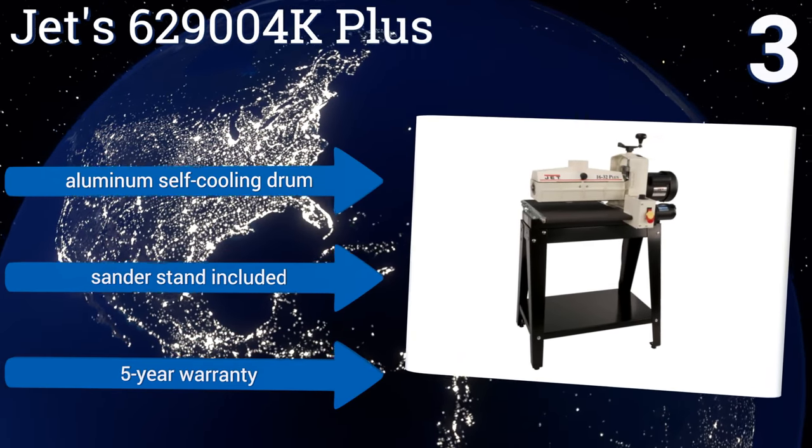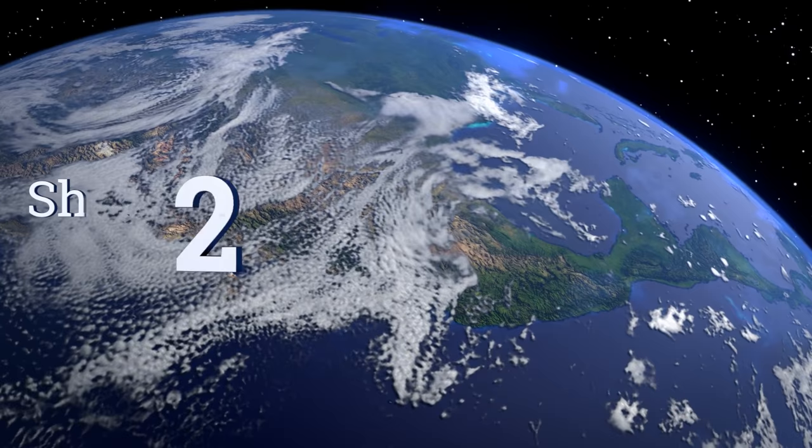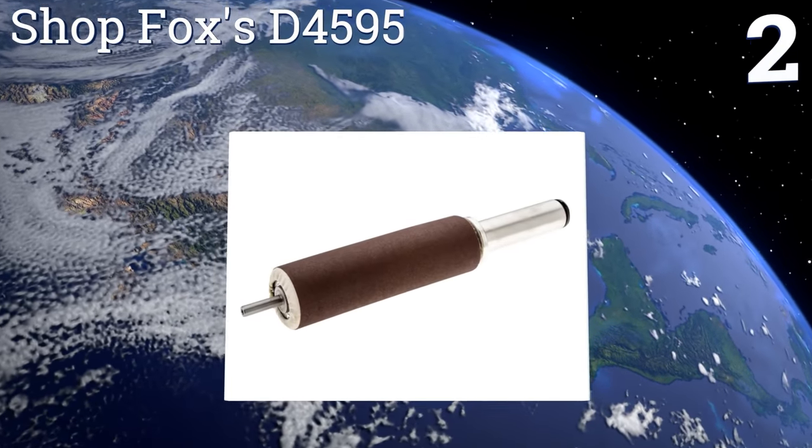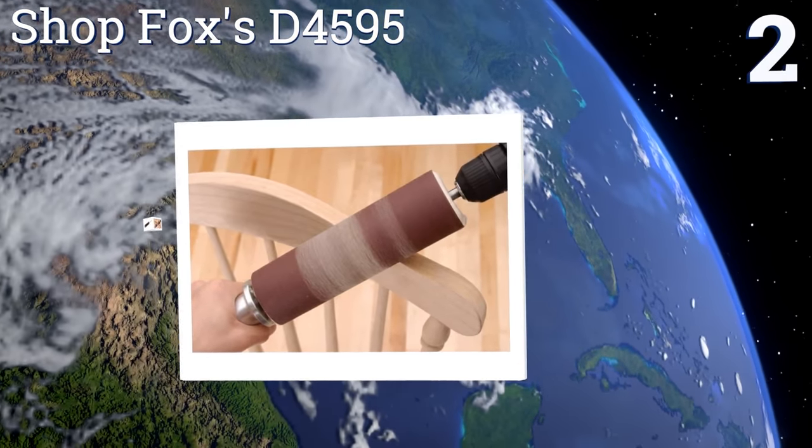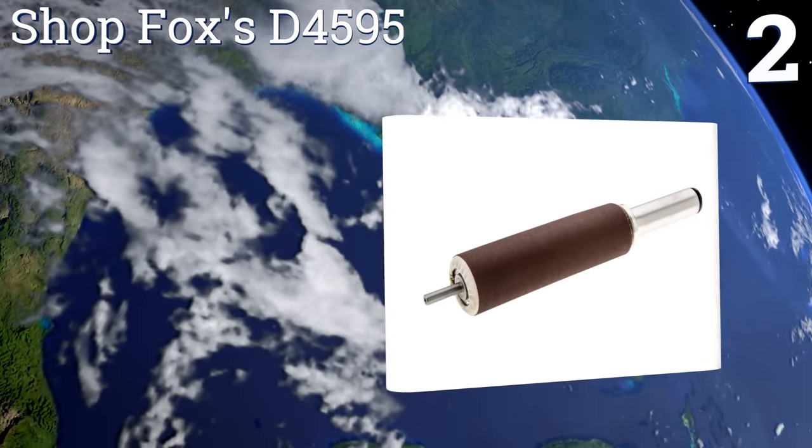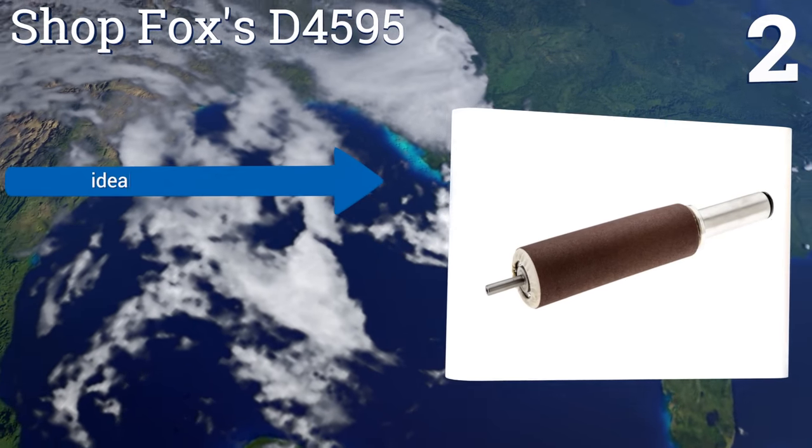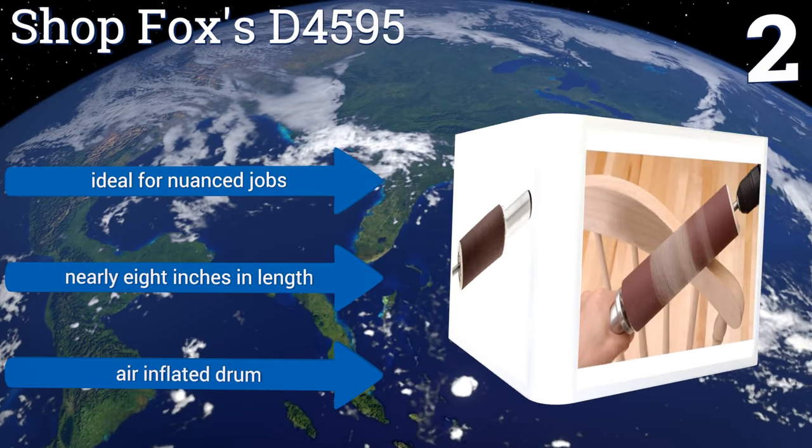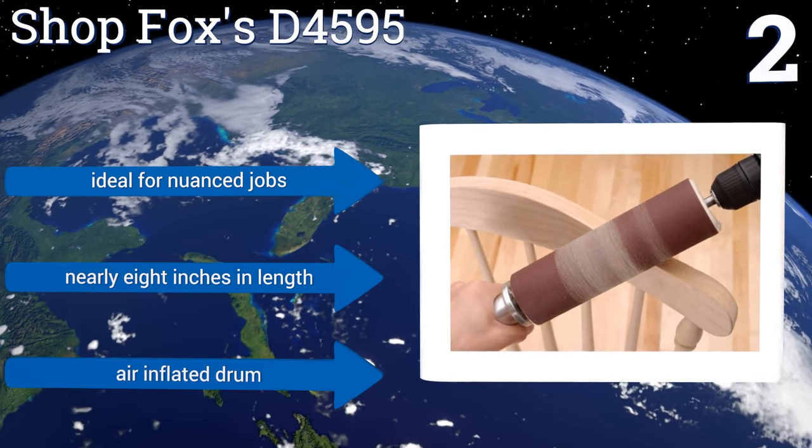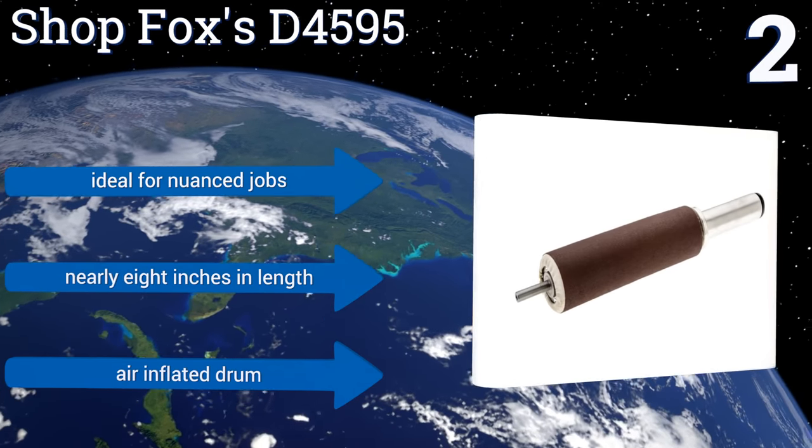At number two, ShopFox's D4595 handheld pneumatic drum sander takes the drum out of its traditional housing and puts it directly in your hands. Instead of using a dedicated motor to turn, this unit hooks into electric, cordless, or air-powered drills, drastically reducing its footprint. It includes an air-inflated drum and is ideal for nuanced jobs. It's nearly eight inches long.